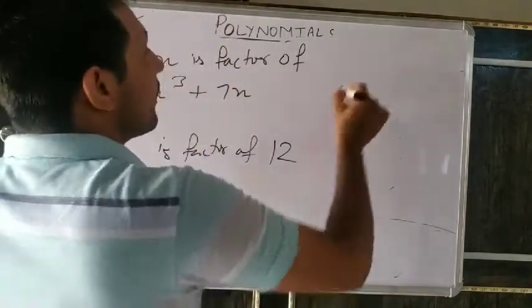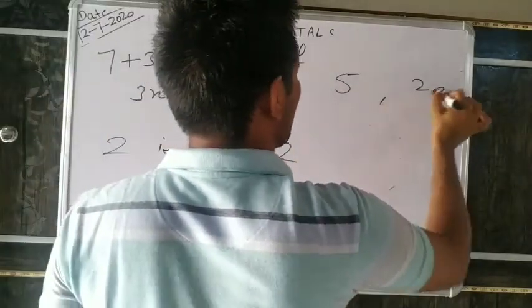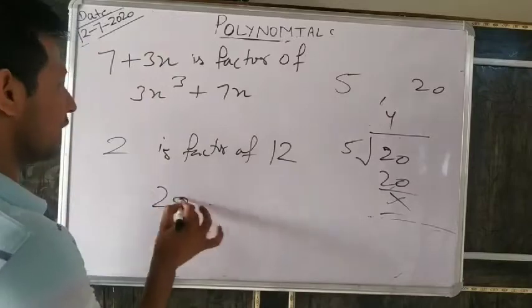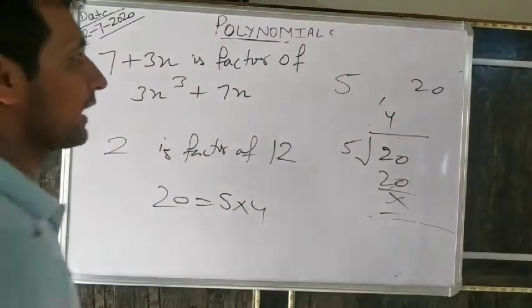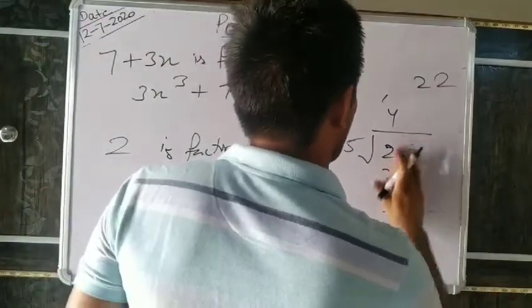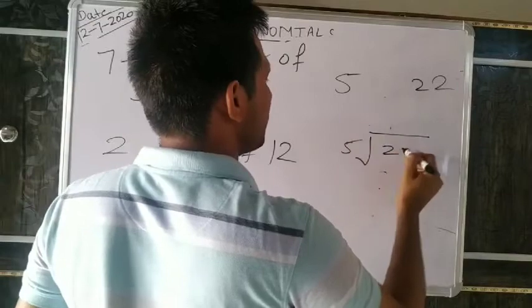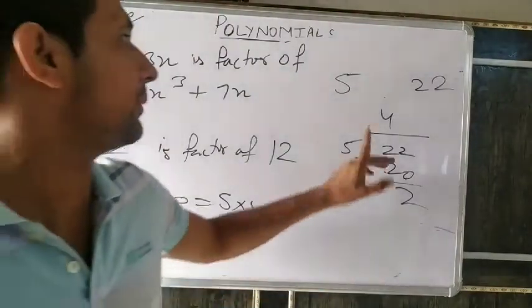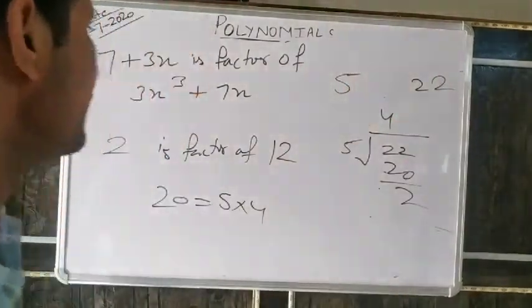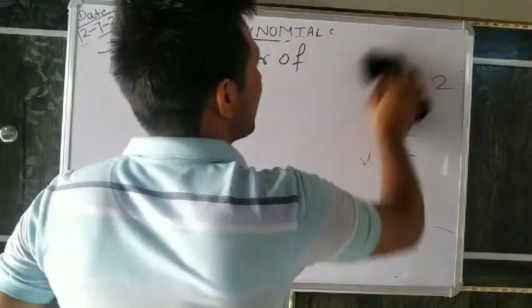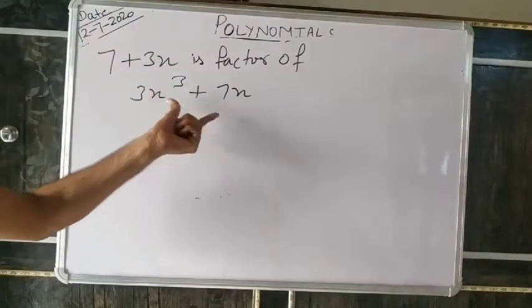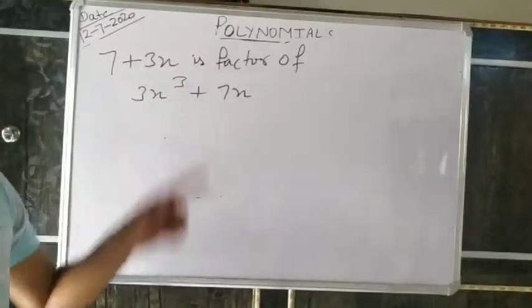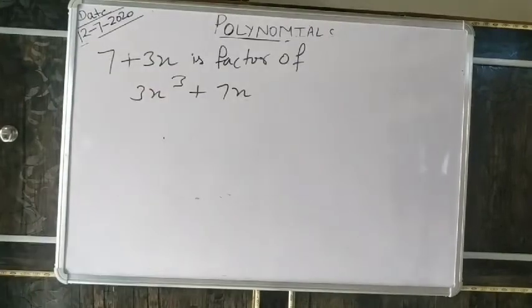If I ask you to check whether 5 is a factor of 22 — 22 divided by 5 gives remainder 2. If remainder is not equal to zero, it means 5 is not a factor of 22. So to check if 7+3x is a factor of 3x³+7x, we divide 3x³+7x by 7+3x. If remainder is zero it is a factor; if remainder is not zero, it is not a factor.